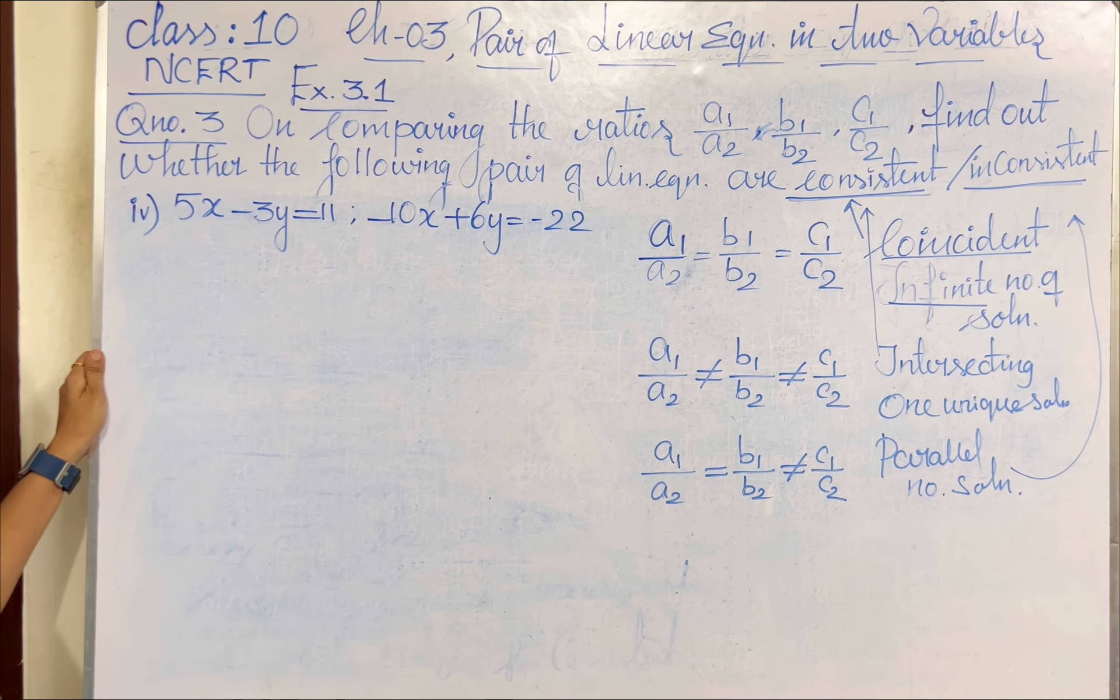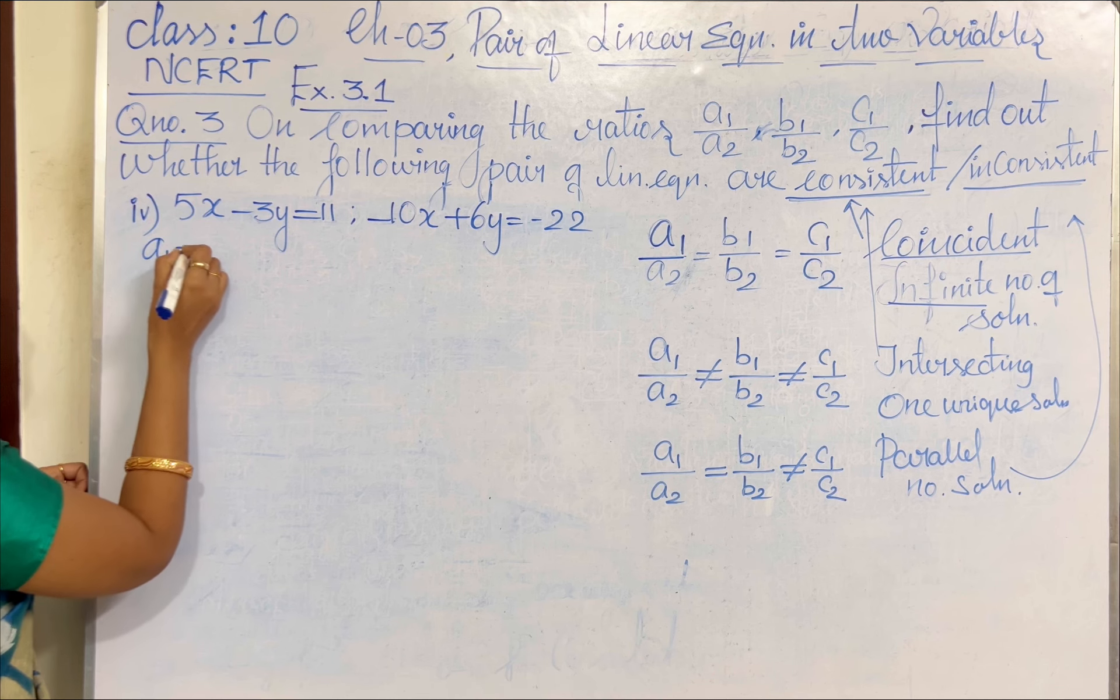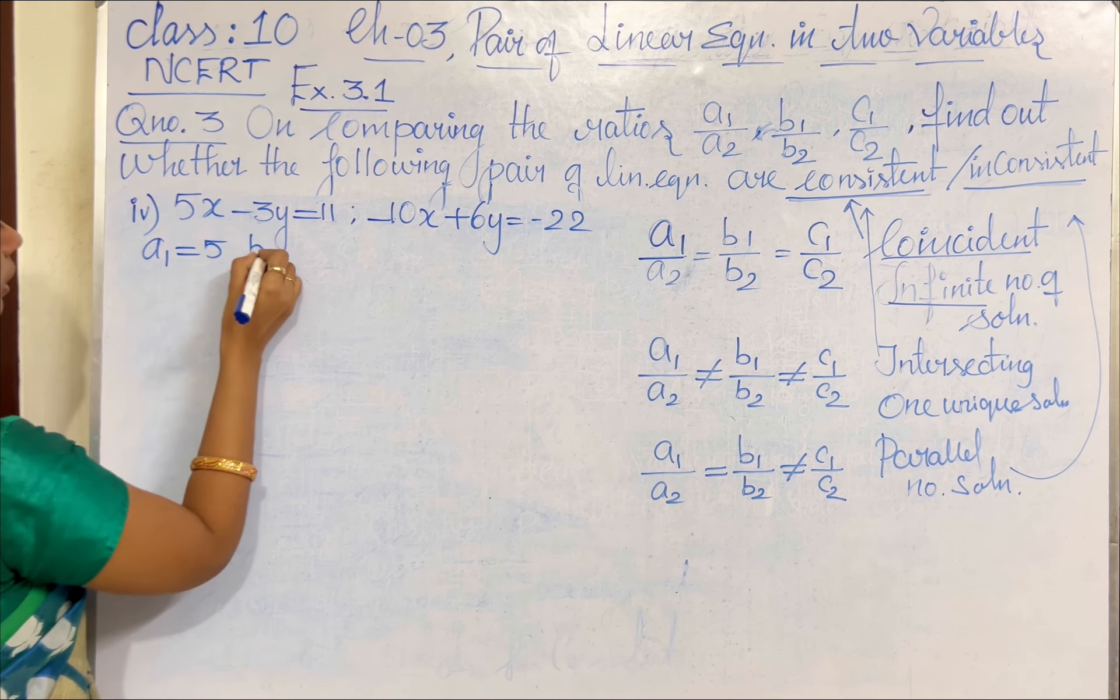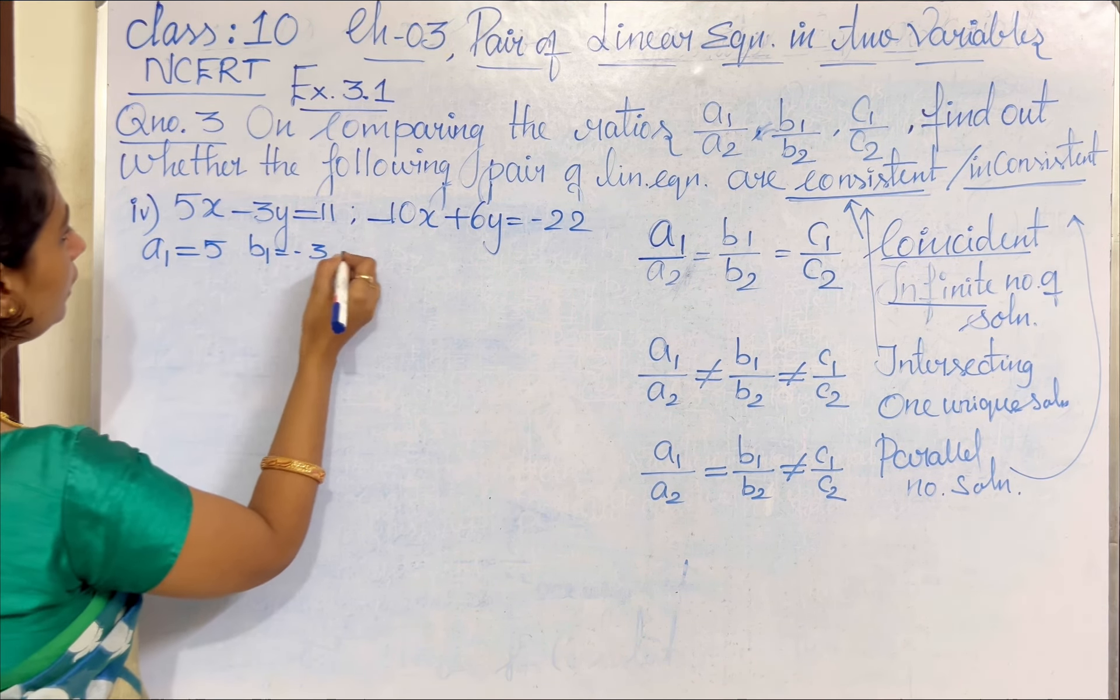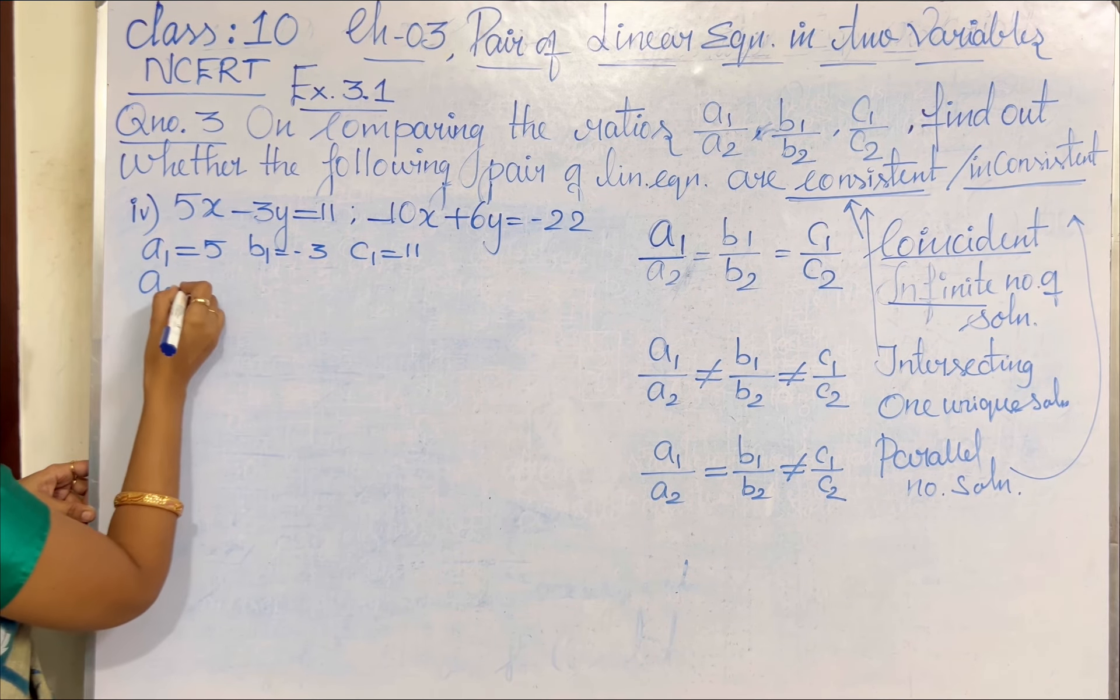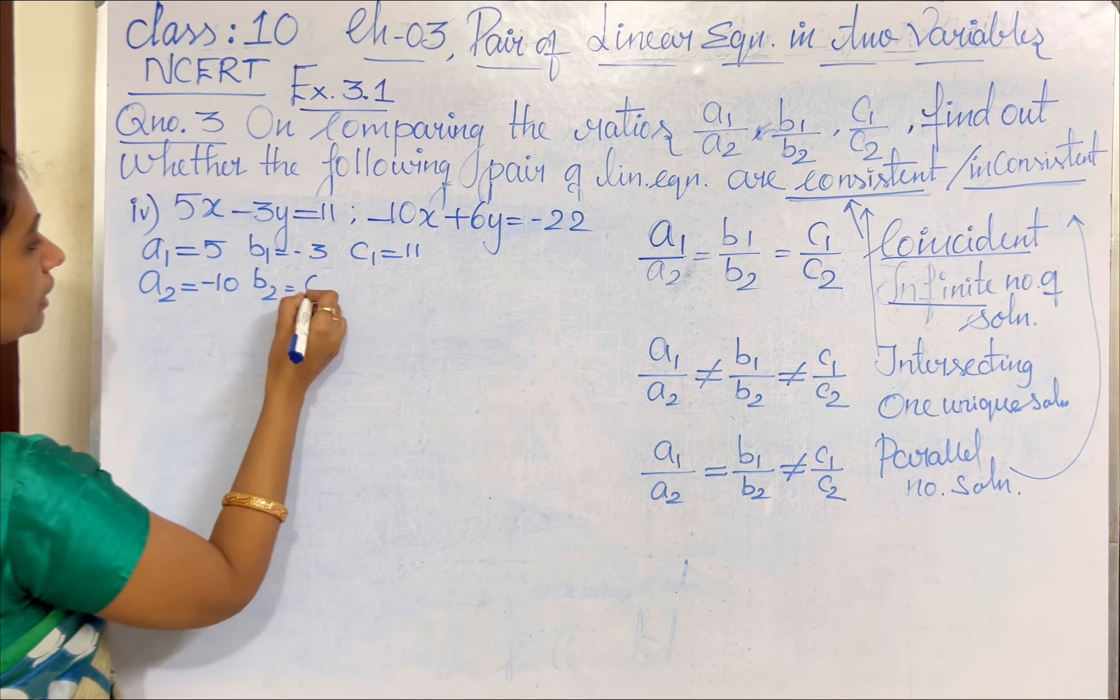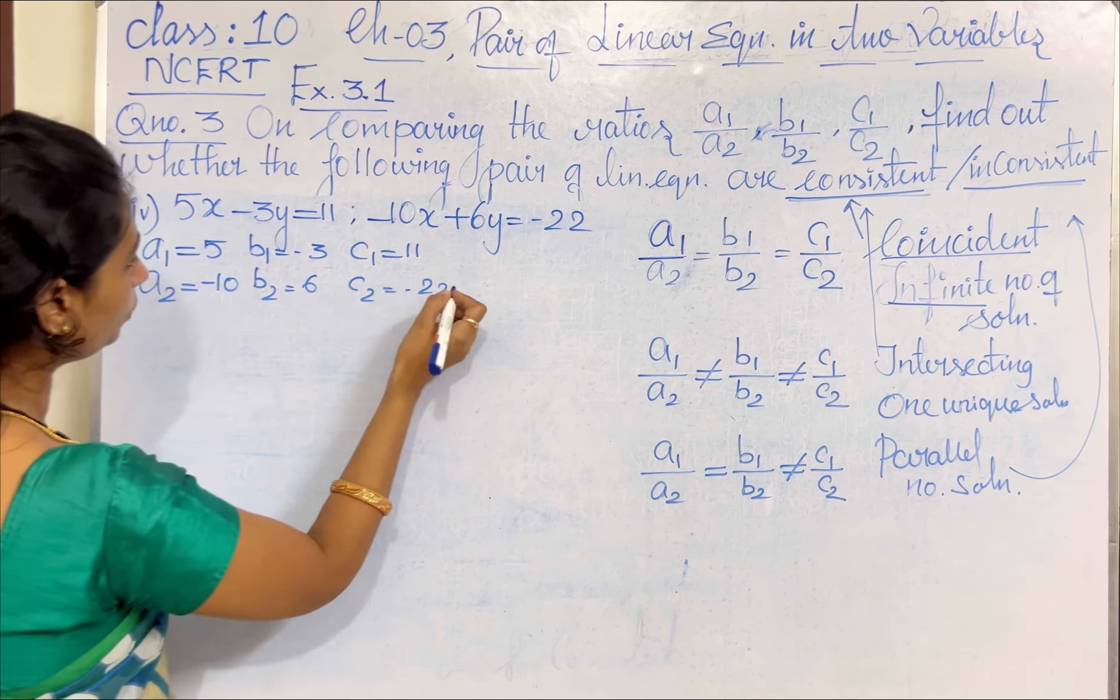Now, the given equation, fourth subdivision: we have 5x minus 3y equal to 11, minus 10x plus 6y equal to minus 22. So, from the equation, we know that A1 equal to 5, B1 equal to minus 3, and C1 equal to 11. From the second equation, we know that A2 equal to minus 10, B2 equal to 6, and C2 equal to minus 22.